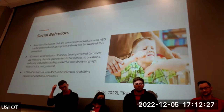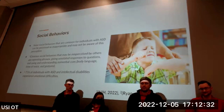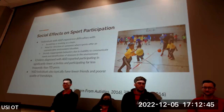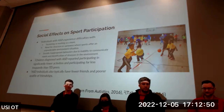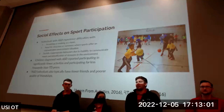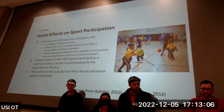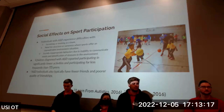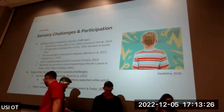71% of individuals with ASD and intellectual disabilities experience multiple social difficulties. In sports, this manifests as difficulty socializing or working as a team, a need for structure or sameness in an unpredictable environment, socially inappropriate behaviors due to inability to communicate needs, and difficulty identifying stressors—which can lead to emotional meltdowns. Children with ASD also report participating in significantly fewer activities and at lower frequency than typically developing peers, and typically have fewer friends and poorer quality friendships.